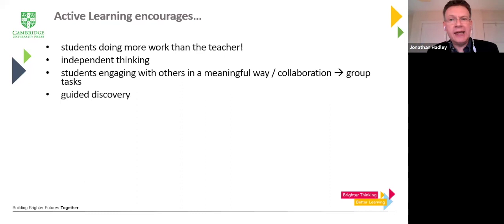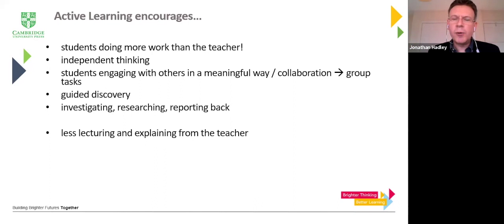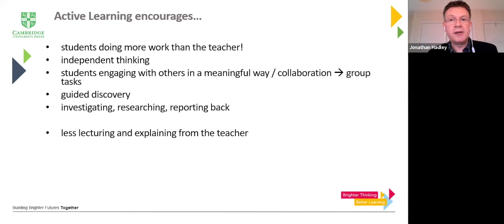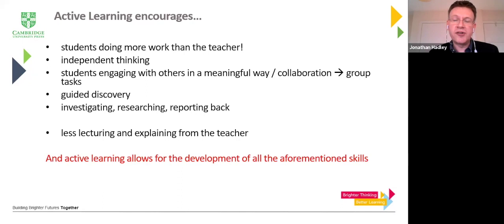Active learning means students working out for themselves, discovering for themselves, carrying out research, and then reporting back to the class, their group, their partner, and the teacher. This means the role of the teacher is moving away from that traditional person at the front who is lecturing and explaining. There may be a role for some explanation, but it shouldn't be the dominant methodology. It should be the students working out what's going on in the text, from the listening, or from grammar rules for themselves. By encouraging this approach, all those 21st century skills, making it meaningful and enjoyable — all of that is covered and developed.